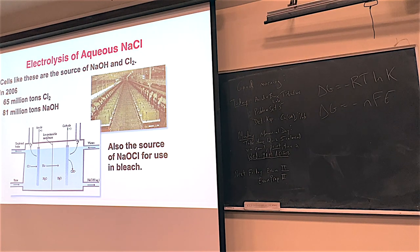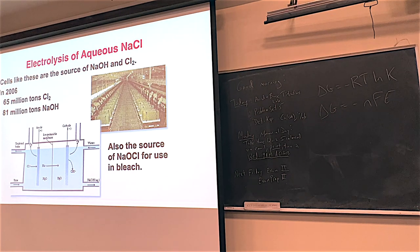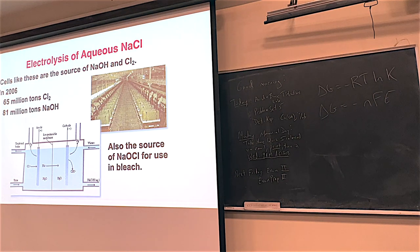Industrially, they have huge reservoirs to make things like sodium hydroxide, chlorine gas, and hypochlorite. Sodium hypochlorite — used in bleach — is made this way. All of these chemicals are produced using electrolysis. Making sodium hydroxide is best done by electrolysis, as is chlorine gas, hypochlorite, sodium metal, and potassium metal.